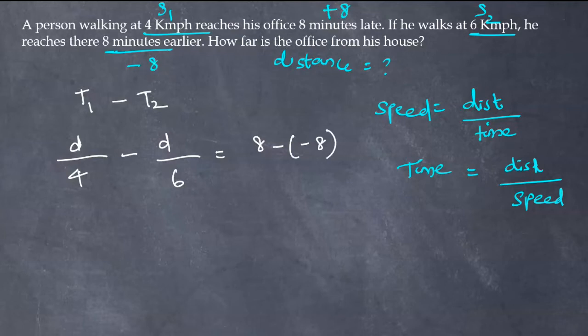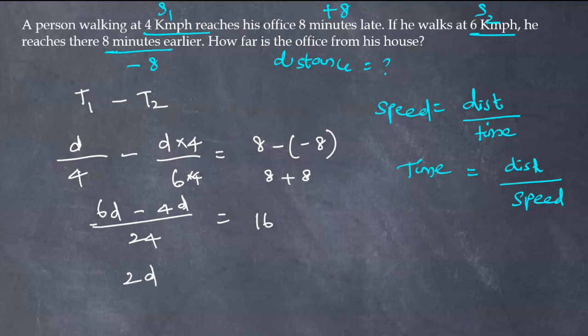So when you simplify this, the LCM for 4 and 6 is 24. So 6D minus 4D equals 24. Minus minus 8 becomes plus 8, which equals 16. So 2D by 24 equals 16.